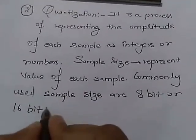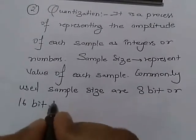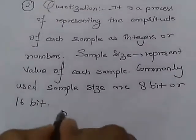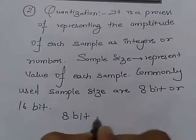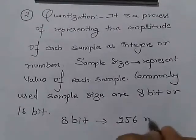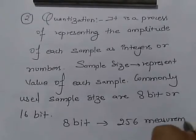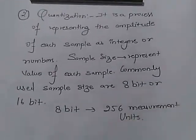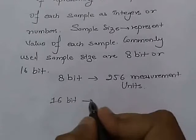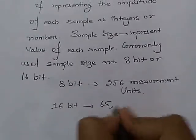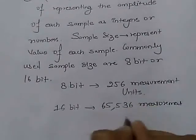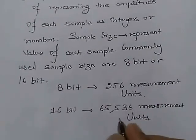The larger the sample size, more accurately the data will be described or the sound will be recorded. If we have an 8 bit sample size, then it will provide us 256 measurement units.